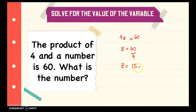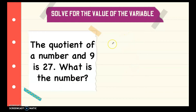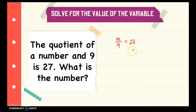60 divided by 4 is 15, so the value of the number is 15. To check: 4 times 15 gives 60, so our answer is correct. Next, the quotient of a number and 9 is 27. Quotient is the answer in division, so we represent the number as m, and m divided by 9 equals 27. To isolate m, we transpose 9 to the other side. Since this is division, when we transpose it becomes multiplication, so m equals 27 times 9.